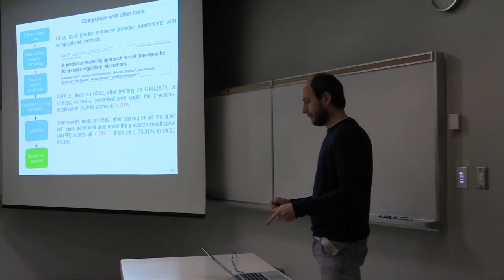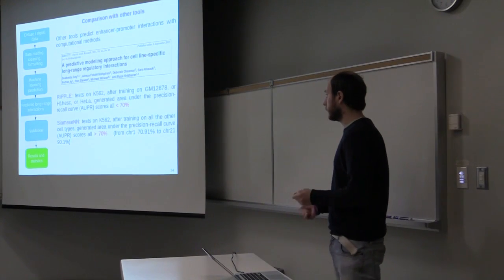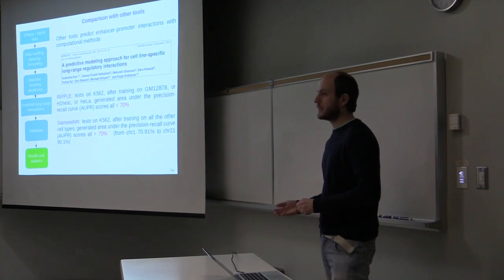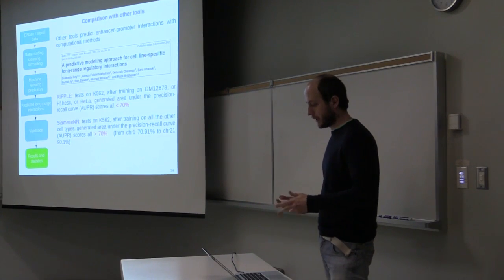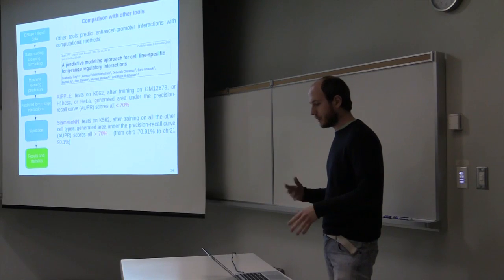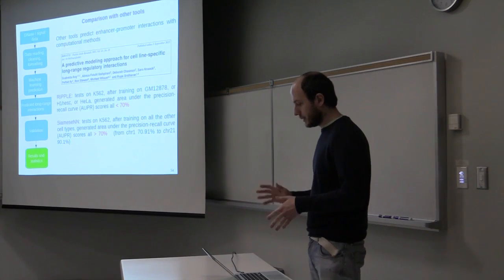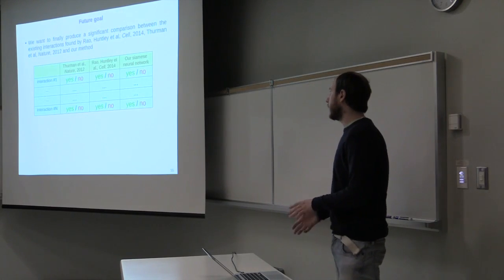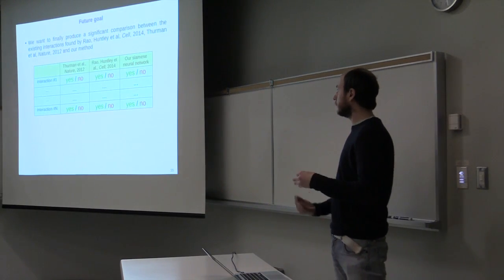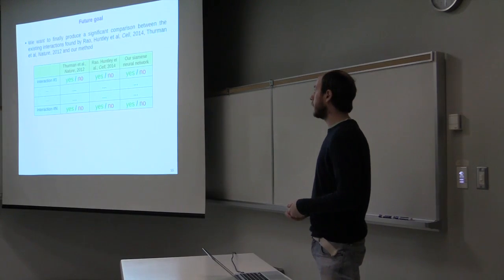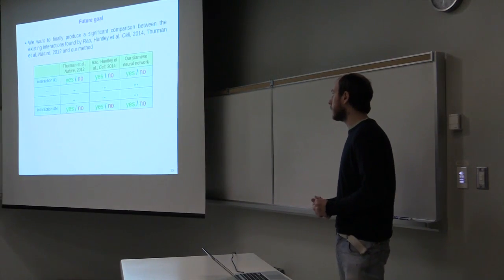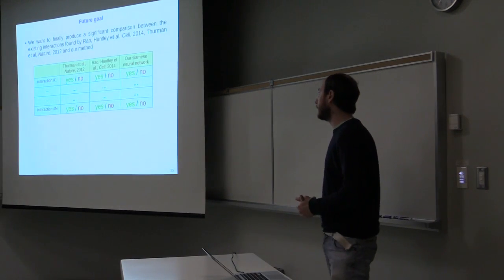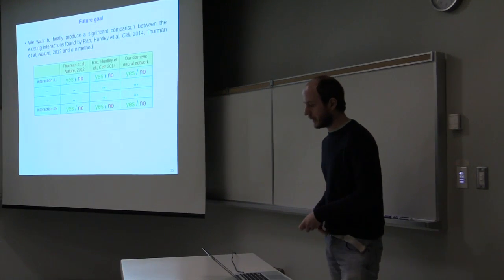And then we ran a comparison with a previous tool that's able to also do these cell-type-specific predictions like TargetFinder, and we got the precision-recall area under the curve better than them. A final goal is to get for each possible interaction to state if it was found by Bob Thurman in Washington, if it was found by Lieberman-Aiden, and if it was retrieved by our method.